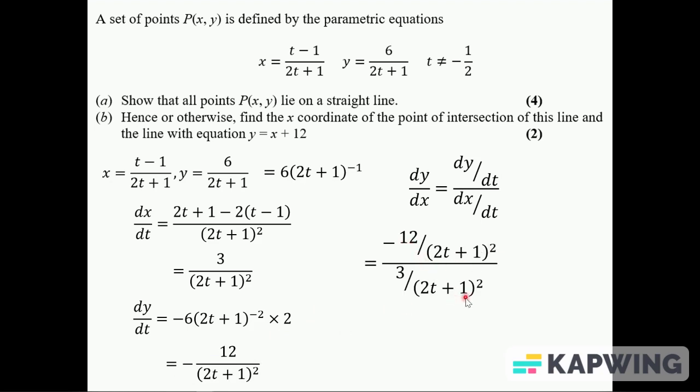These 2t plus 1 squared sort of cancel, multiply the top and bottom by (2t plus 1) squared really, giving me minus 4. I'm going to even then find out what the equation of the line is because I know the gradient is always minus 4, so it is linear. But I can find the equation of the line and solve it simultaneously with y equals x plus 12 to do part b.